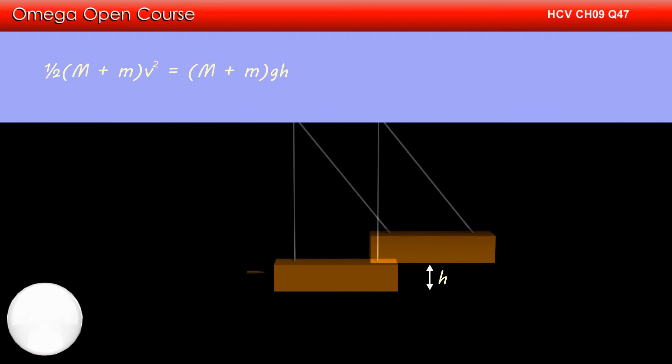Just after the collision, when the bullet gets embedded in the pendulum, the mass of the combined system is M plus m and has speed V. The kinetic energy of the system gets converted into gravitational potential energy when the pendulum is at height h.